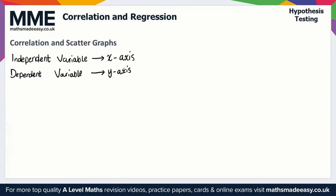There won't always be a clear independent and dependent variable, and in that case it's not as important which way around they go on a scatter graph.